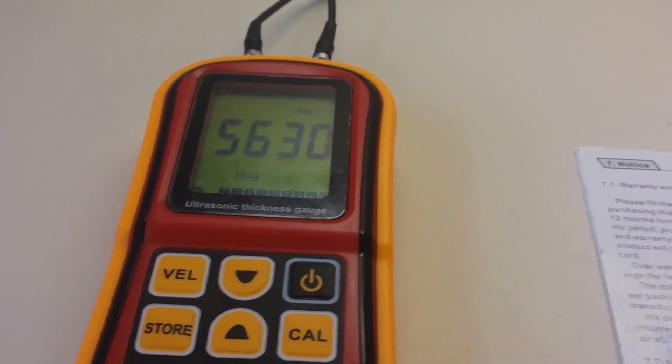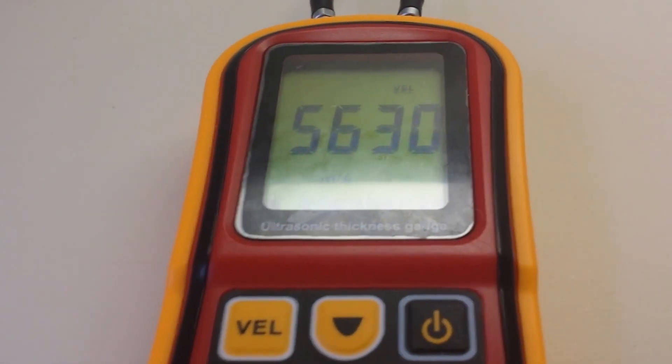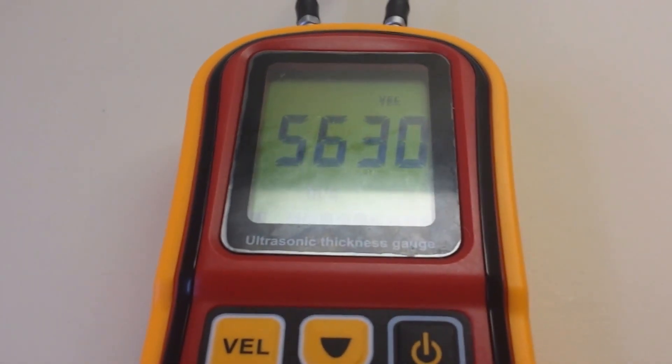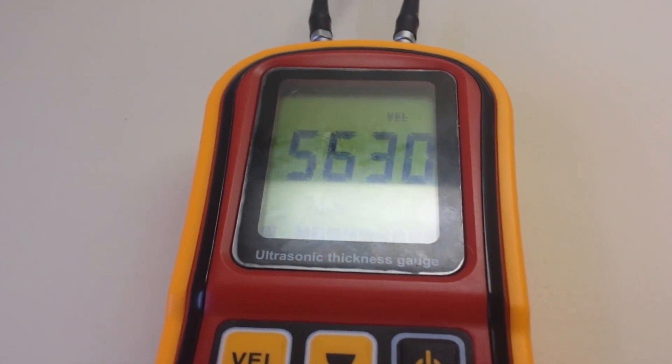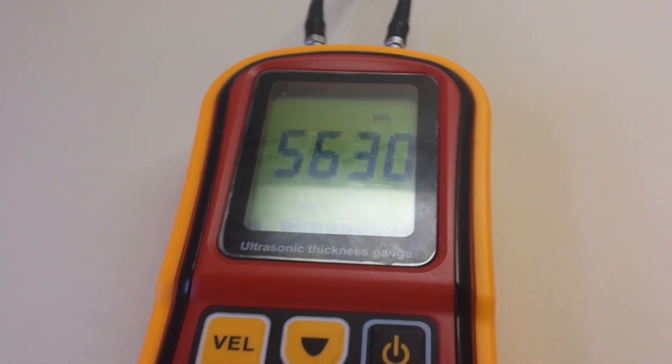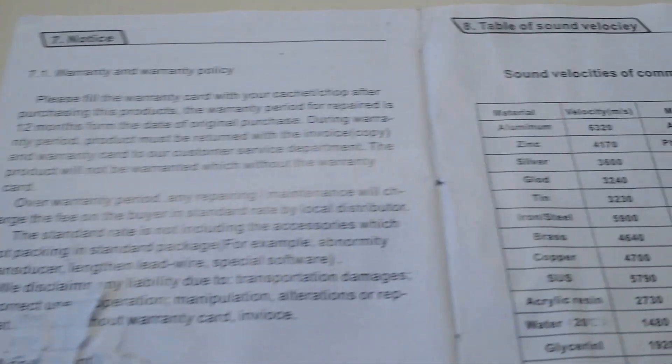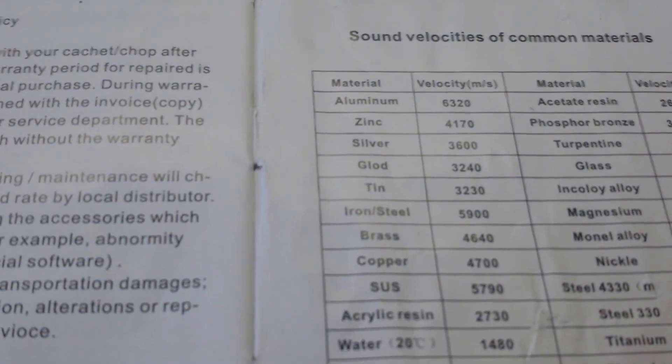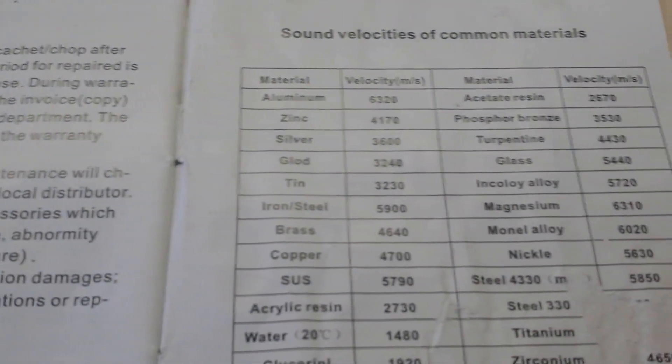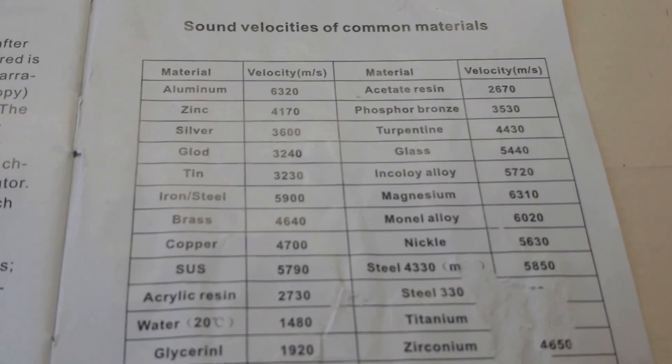Now basically what I'm going to do, as you can see on the device here, it's already set with a velocity of 5630. And as we move to our chart here that comes with the device, you can see that the value for nickel is in fact 5630.